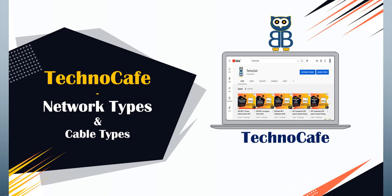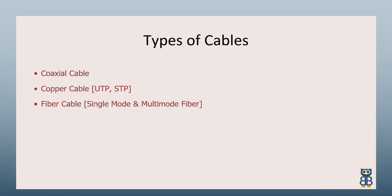To build a network, or to connect devices like computers, servers, switches, routers, and firewalls, we need cables. Selecting the right cable based on the network is a very tricky task. There are multiple types of cables available in the market: coaxial cable, copper cable, and fiber cable.